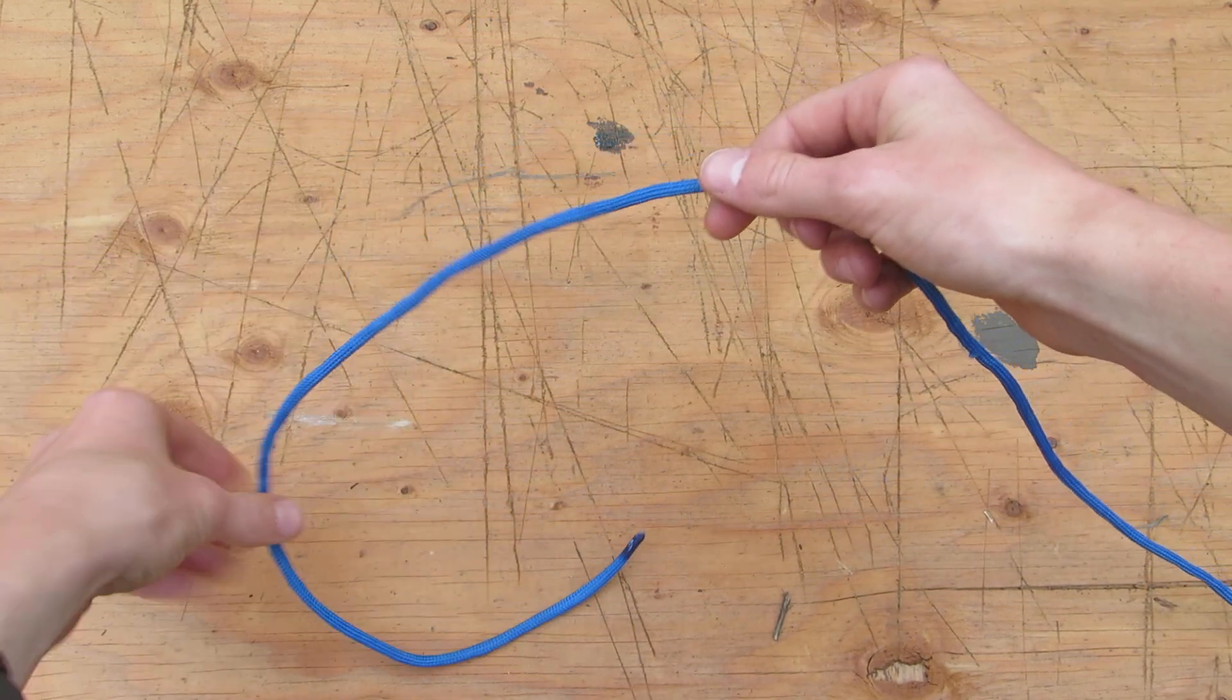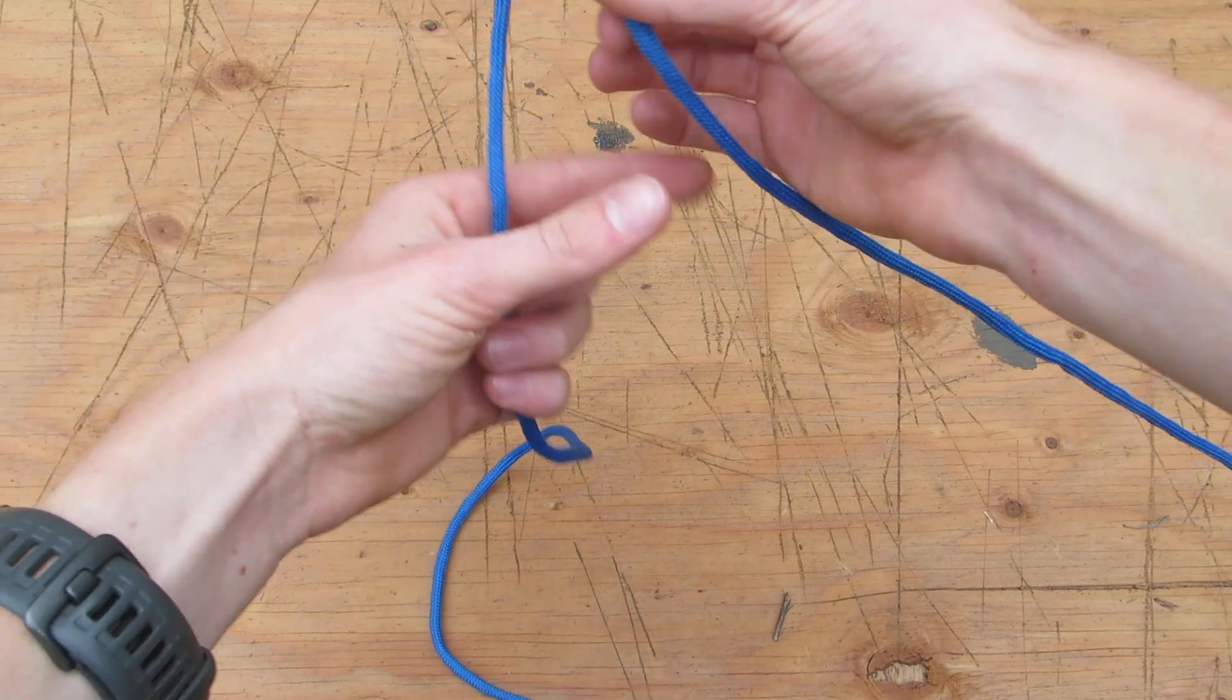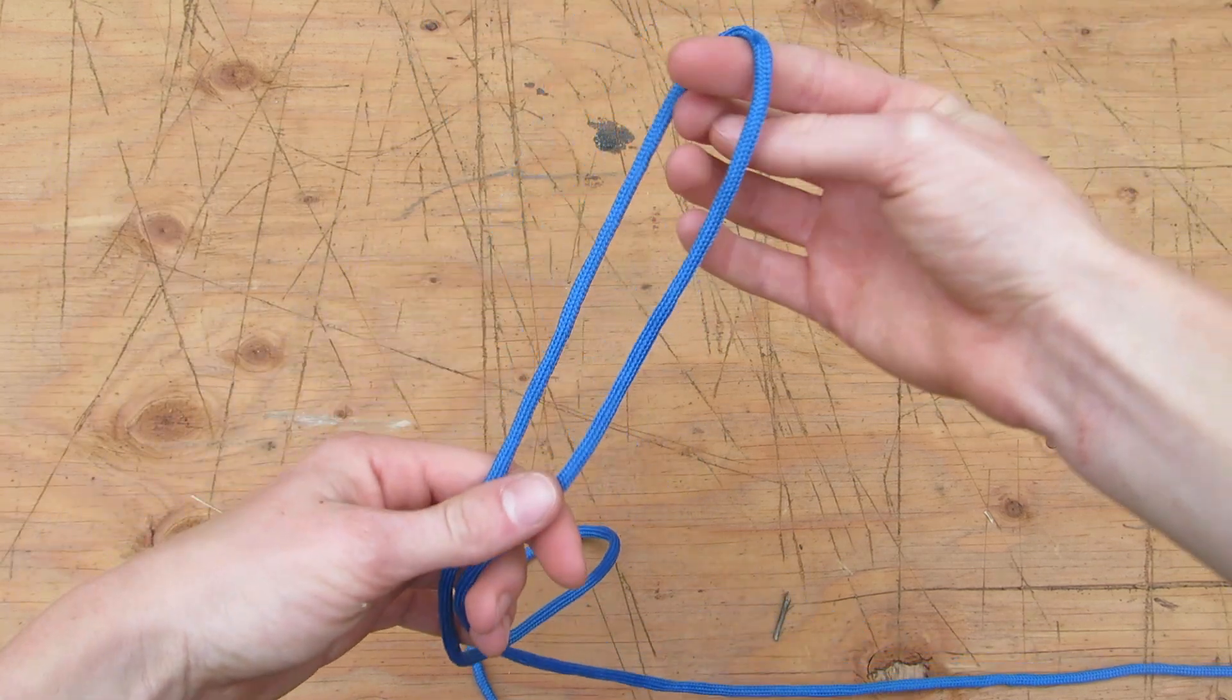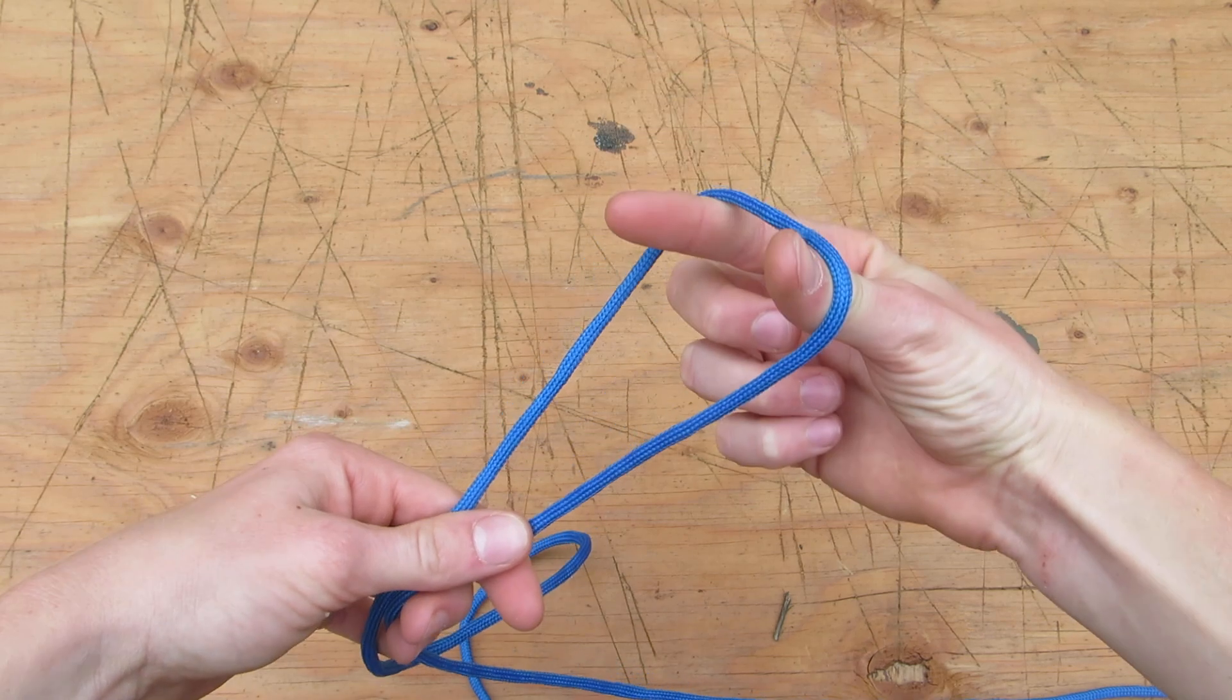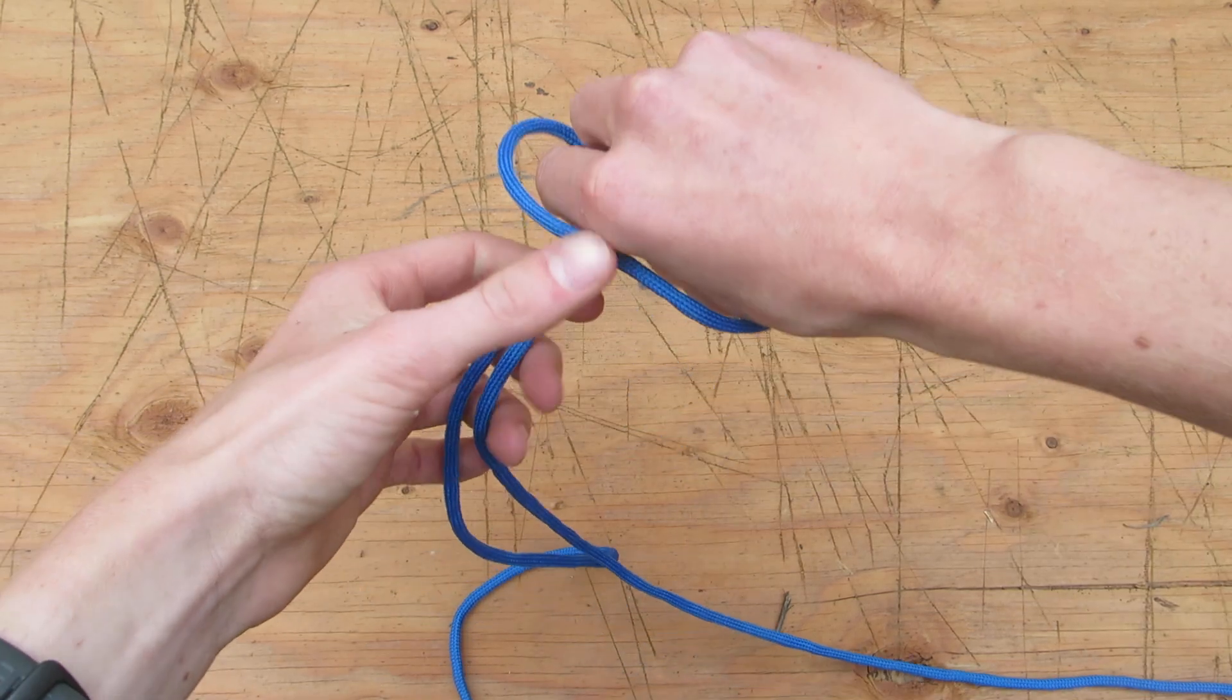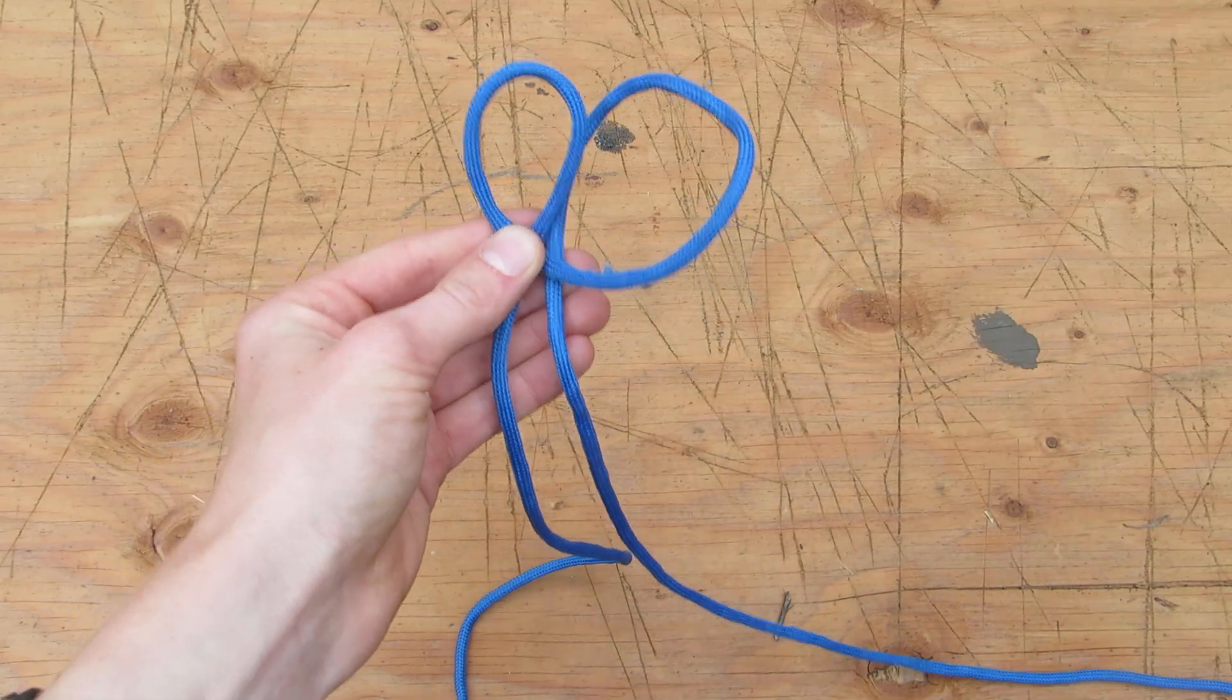First I'm going to get away from my end, then I'm going to create a bight like this. Put my two fingers in it like this, twist it over like that.